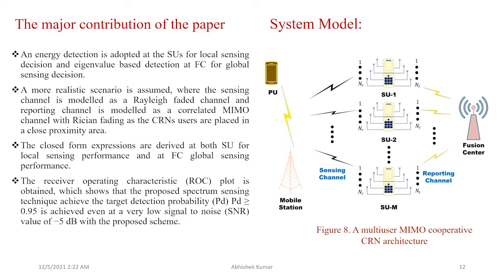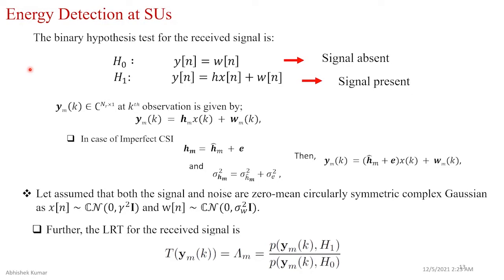For energy detection at SUs, the spectrum sensing problem is formulated as a binary hypothesis detection problem where H0 is the case where the signal is absent (y[n] = w[n]) and H1 is the case where the signal is present (y[n] = h·x[n] + w[n]), where h is the channel and w[n] is noise. For the k-th observation at the m-th SU with multiple receive antennas, the received signal vector y_mk has dimension Nr×1, where Nr is the number of receive antennas at the SU.